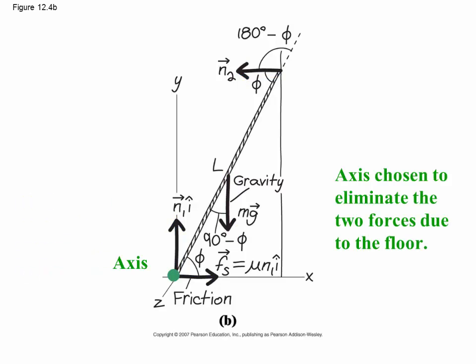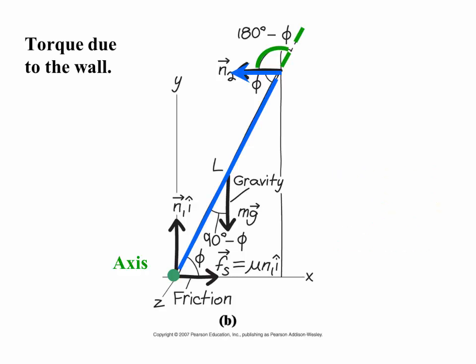Our axis is chosen to eliminate the two forces due to the floor. Even if, I want to emphasize this, even if the unknown we want to find is the force of friction at the ground, the way we find it is put the axis at the bottom, eliminate the force of friction from the torque problem, use torque to find the force of the wall up there at the top, and it's equal to the force of friction at the bottom because those are the only horizontal forces. It's much easier to eliminate the forces on the floor and then go back and find the forces that are unknown.